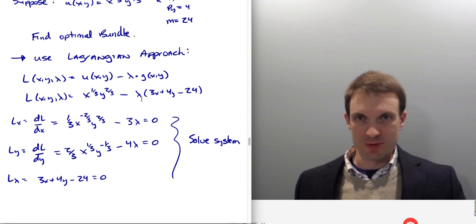And then differentiate with respect to Lambda. What does that do? It just gives us our constraint. So you can move this to the other side, and you have 3X plus 4Y equals 24. That is exactly our budget constraint. Anyway, so I'm gonna solve this system of equations.